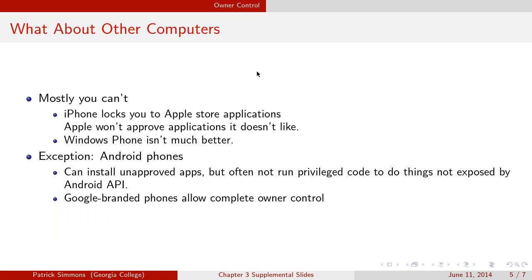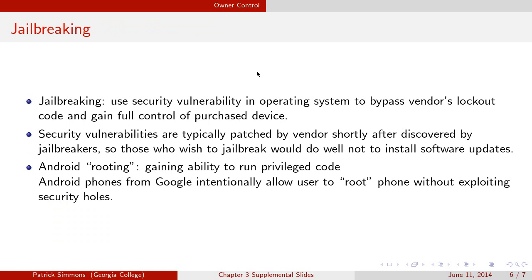So you can get a cell phone that you control, but it's the exception, not the rule. But what if you don't want to buy a Google phone, and you have, say, an iPhone, and you really want full control of it? Often you can — this process is called jailbreaking, because you, the owner, are in a jail and you're breaking out of it. What jailbreaking does is use security vulnerabilities in the operating system of the cell phone, or game console, or whatever, to bypass the vendor's lockout code and gain full control of the device you purchased.